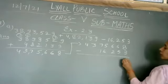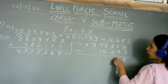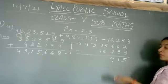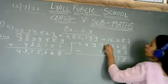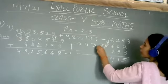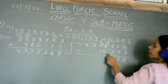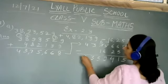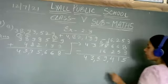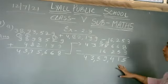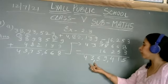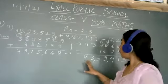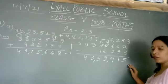Now we will subtract 16,263 from 43,75,668. 8 minus 3 is 5; 6 minus 5 is 1; 6 minus 2 is 4; 5 minus 6 — we cannot subtract, so borrow from 7. 5 becomes 15, and 7 becomes 6. 15 minus 6 is 9; 6 minus 1 is 5; 3 stays as is; 4 stays as is. So the final answer is 43,59,415.